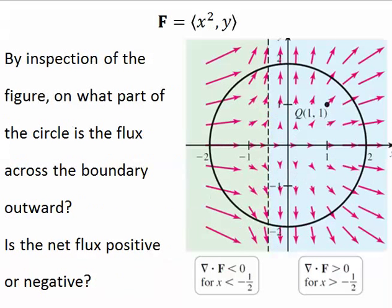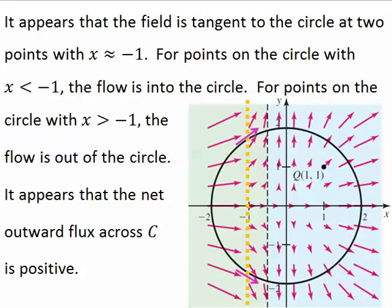By inspection of the figure, on what part of the circle is the flux across the boundary outward? Is the net flux positive or negative? It appears that the field is tangent to the circle at two points with x about equal to negative 1. For points on the circle with x less than negative 1, it appears the flow is into the circle. For points on the circle with x greater than negative 1, it appears the flow is out of the circle. So, if I had to guess, I would guess that the net outward flux across the curve is positive.